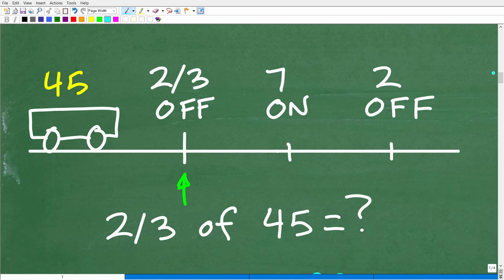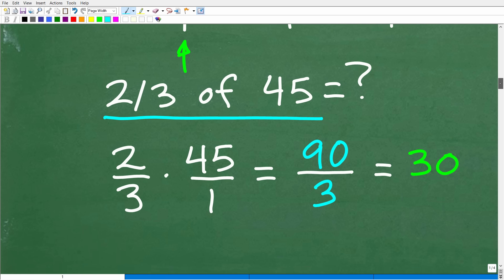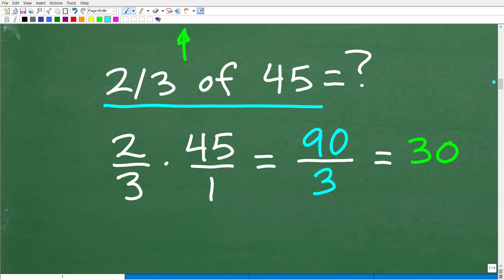So here we have our bus with 45 people that are on it. The first thing we need to understand is two-thirds of these folks are going to get off the bus. So how many people is that? Well, we're going to have to figure out this basic math question right here. What is two-thirds of 45? All right, so what is two-thirds of 45? Well, to get the answer to that question, what we have to do is simply multiply two-thirds by 45.